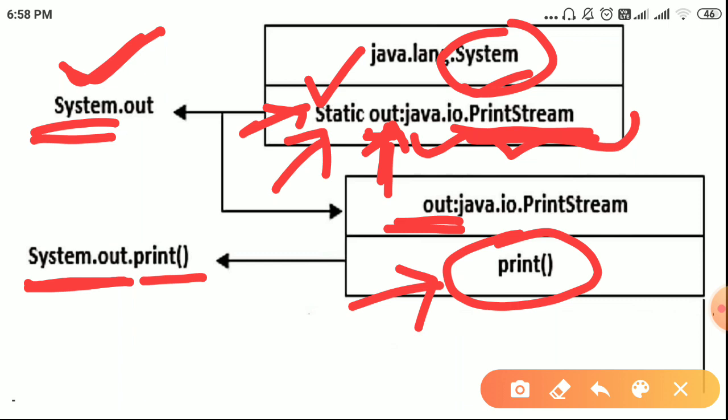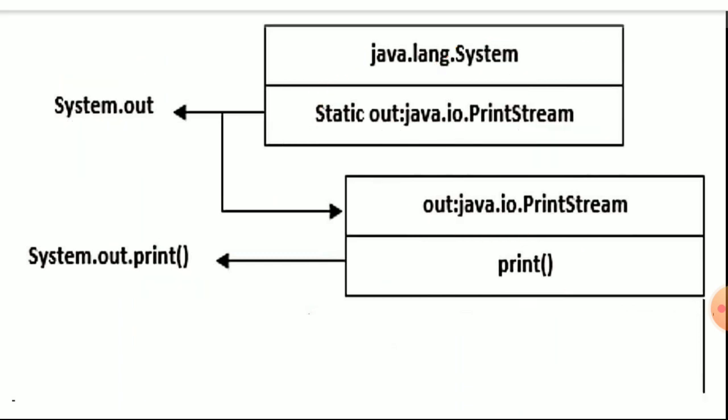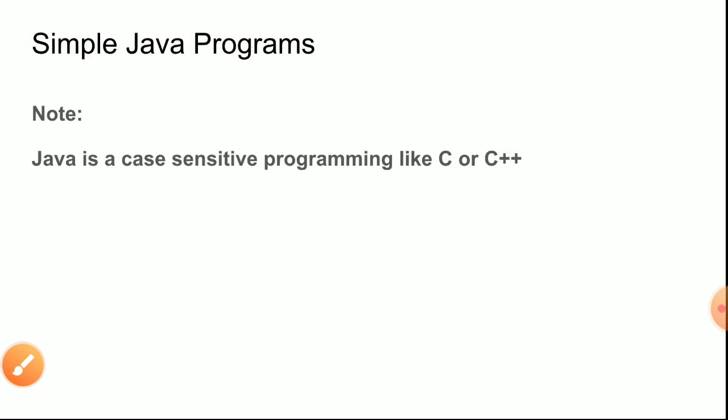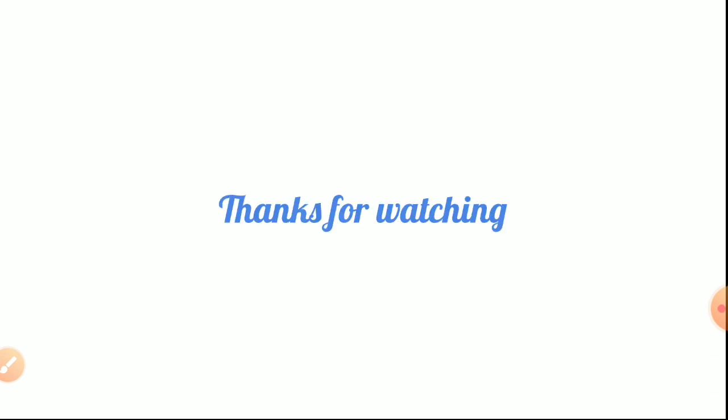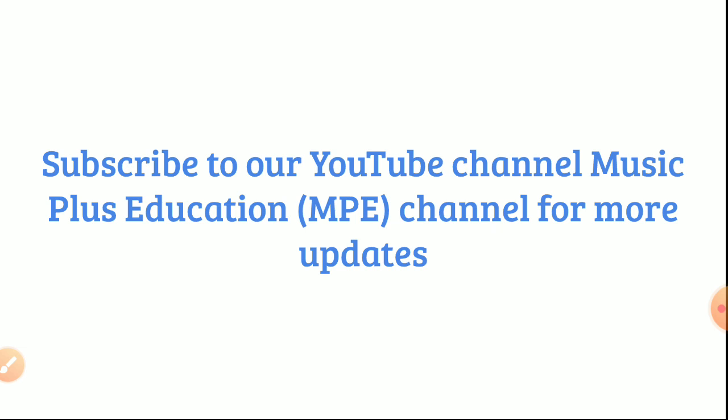Java is a case-sensitive programming language, like C or C++. For example, the keyword 'class' must have a lowercase 'c' — you cannot write it with an uppercase letter. Please be very careful. Hope you have understood. If you have any doubts, please comment below, like, share, and subscribe to our YouTube channel for more updates. Thank you so much.